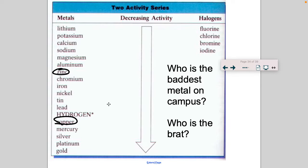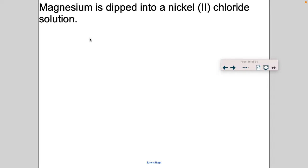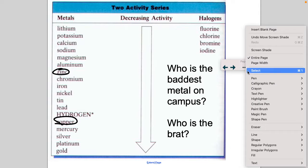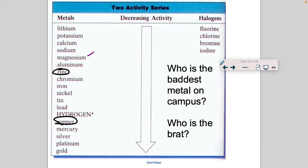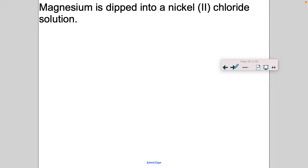All right, so I got zinc and copper. Who's the baddest metal on campus? Zinc. And who's the brat? Copper in this case. So in your notes, you have magnesium is dipped into nickel 2 chloride. So let's find magnesium. Magnesium is right here, and then nickel 2 chloride. So is magnesium going to cut in with nickel chloride? Yes, because magnesium is by itself and this is your A with X. Let's write out the chemical reaction. We have Mg plus NiCl2, because nickel's got a plus two and chlorine's a minus one. MgCl2 plus nickel.